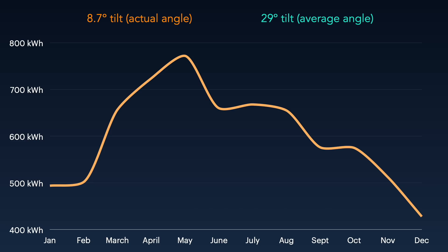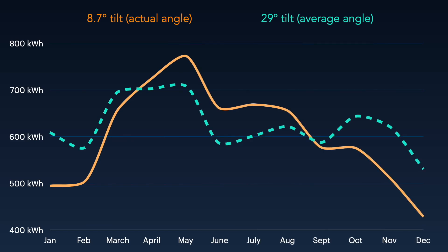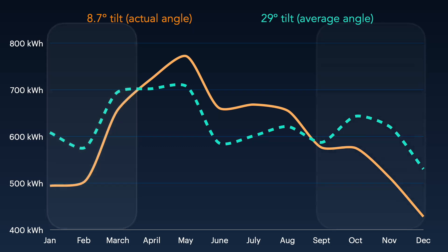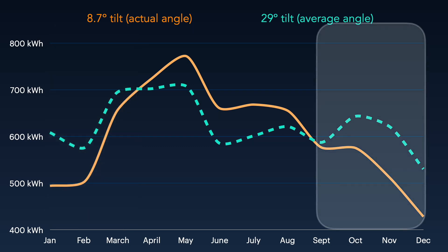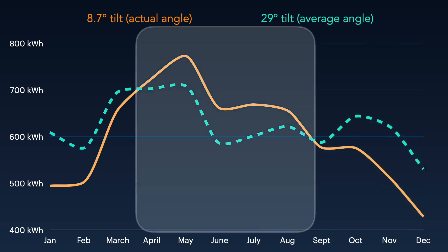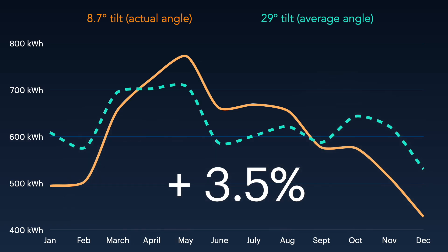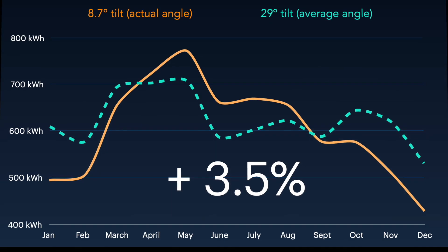The orange line is based on the actual angle that my panels are at and this blue line is the prediction if I change the angle of the panel to the 29 degree tilt. In the early months of the year the 29 degree angle would produce more power. It would also produce more power in the last few months of the year but from April to August my existing angle does better. Averaged out over the whole year I would gain 3.5 percent by changing the angle to the 29 degree tilt.